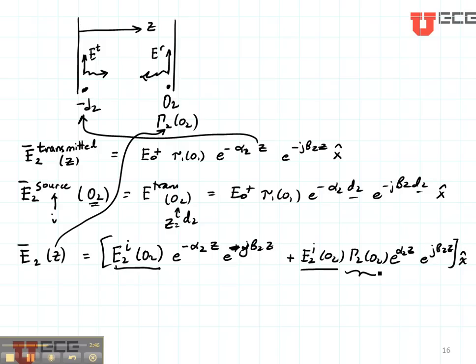Now how do you suppose you get the field in region 3? I want to get it right here at O3. In that case, the transmitted field, which is going to be E3 at O3, is just going to be E2 at O2 times the transmission coefficient at O2.